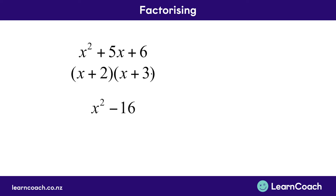Now we're going to look at a slightly more complex example. Here we have an x squared and another squared number — this is 4 squared. When this happens, you'll notice we don't have a middle x term. But in actual fact, it's like having a 0x term in the middle: x squared plus no x's minus 16. We can find two numbers that multiply to make negative 16 and add together to make 0.